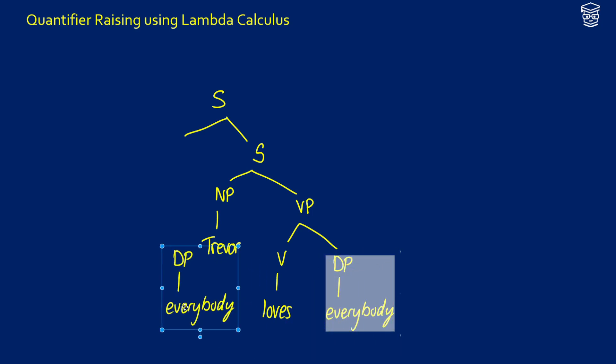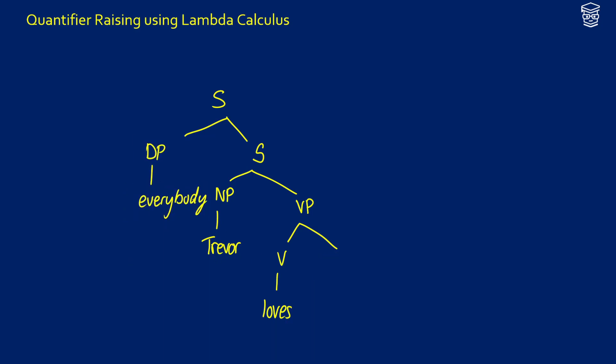Taking this determiner phrase, moving it up into that position. Then in its place, we would leave a determiner phrase with a trace and give this an index to connect them.